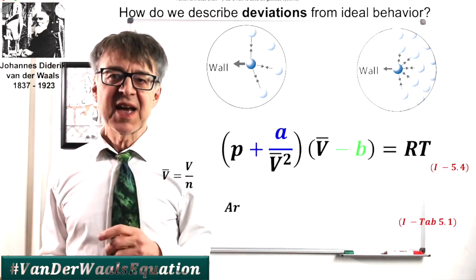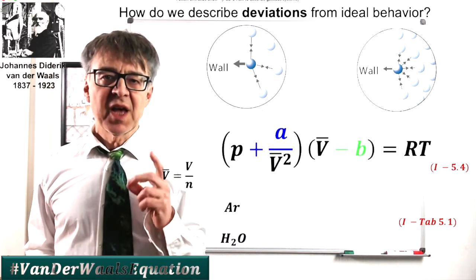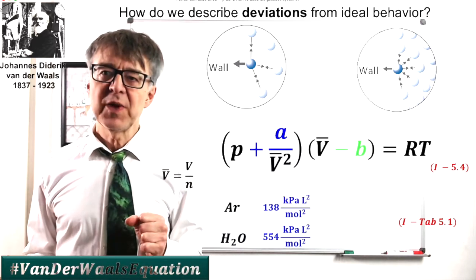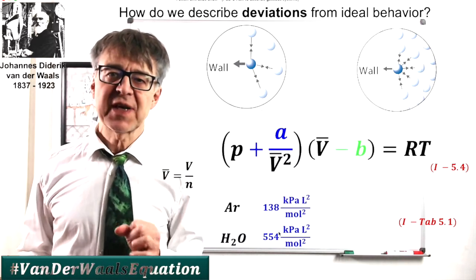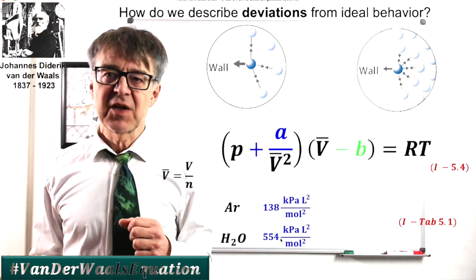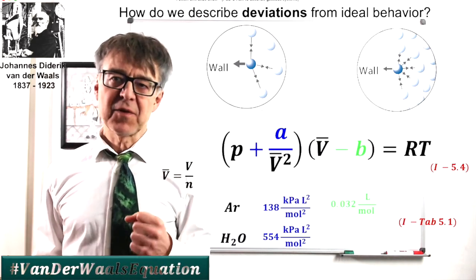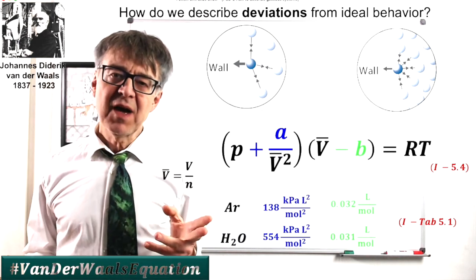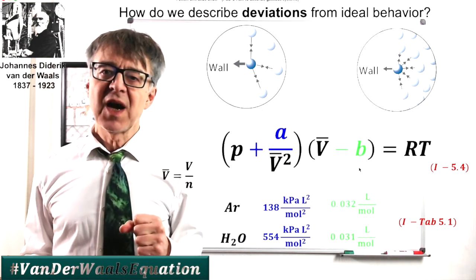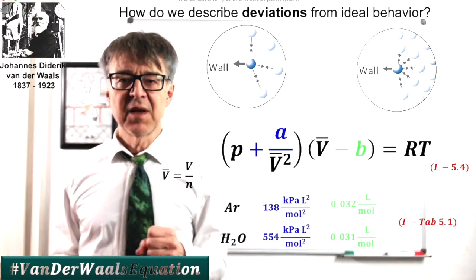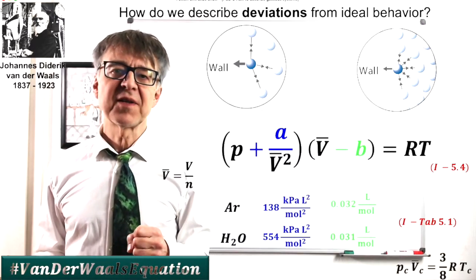For the ideal gas, of course, A and B are zero. If we compare the real gases argon and water vapor, water has a much larger factor A, as a result of dipole-dipole interactions. There are greater attractive forces in water. However, H2O and argon are about the same size, so there is hardly any difference in B for the two particles.